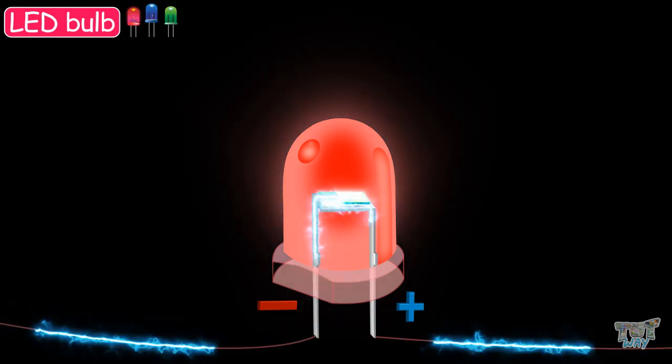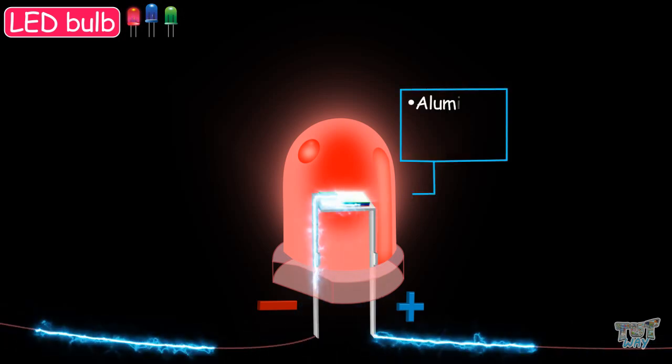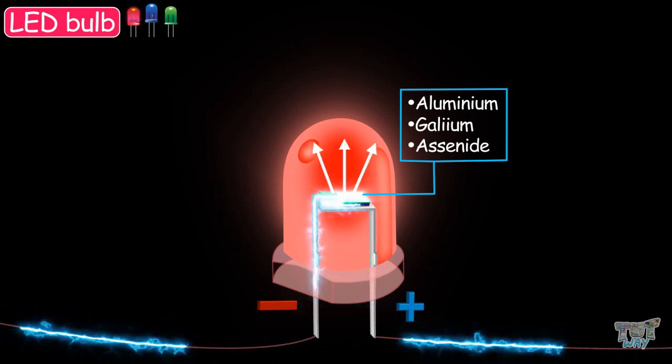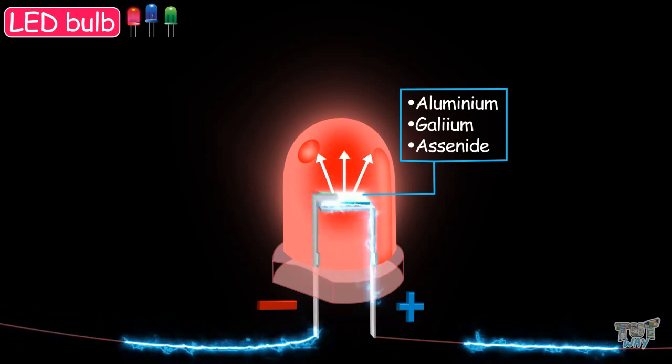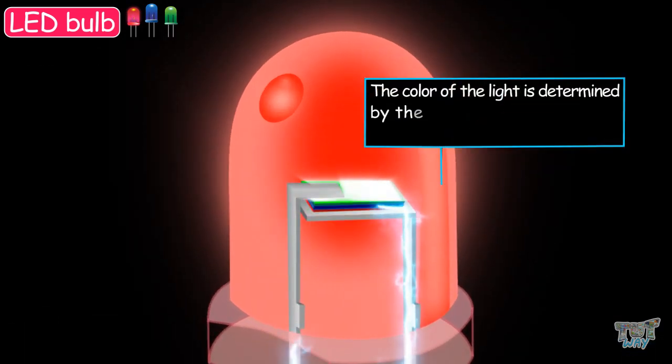The movement of electrons across the semiconductor material produces light, and this is called electroluminescence. The color of light is determined by the energy band gap of the semiconductor.